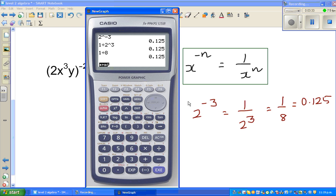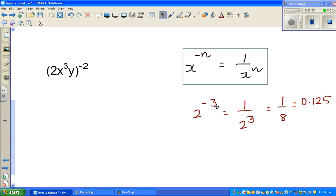So basically what happens is if you have a negative index, you make it positive by taking it from the numerator to the denominator.